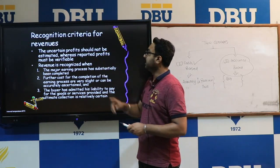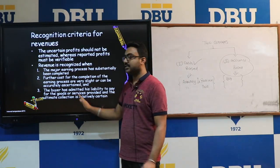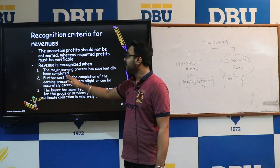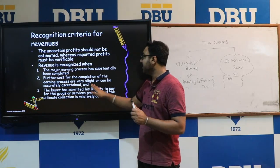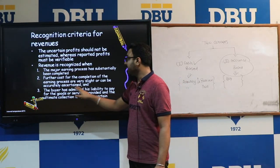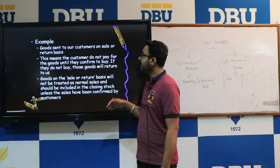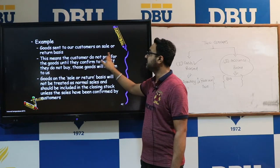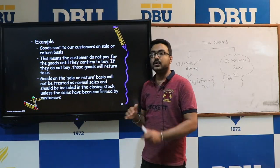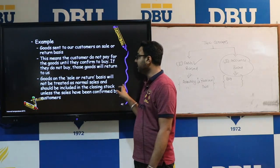Uncertain profit should not be estimated, whereas reported profit must be verifiable. The major findings under this concept are: the major earning process has been substantially completed; further costs for completion should be verified to accurately ascertain proper cost; and the buyer has admitted liability to pay for the goods or services provided, with ultimate collection being relatively certain. For example, goods sent to a customer on sale or return basis means the customer does not pay until they confirm to buy; if they do not buy, the goods are returned.